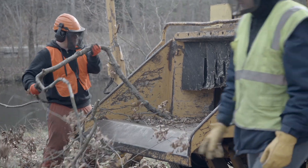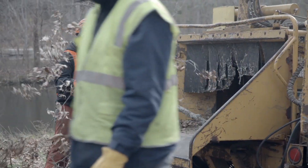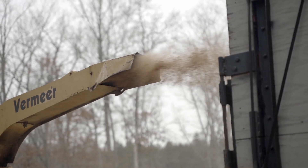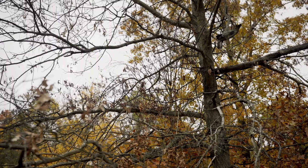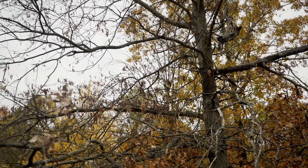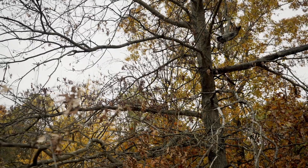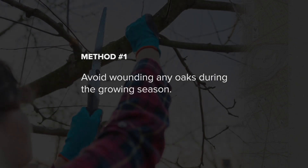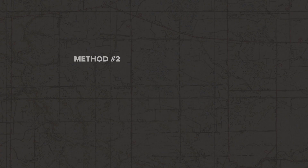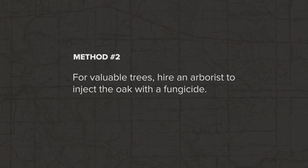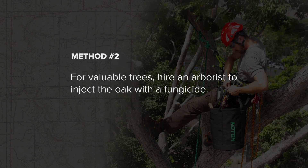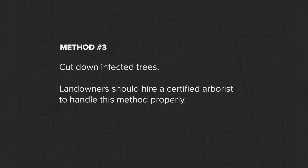The impact that private landowners can have by not managing an oak wilt outbreak can be widespread. For private landowners, there are several recommended methods for preventing an outbreak: firstly, avoid wounding any oaks during the growing season; secondly, for valuable trees, hire an arborist to inject the oak annually with a fungicide; and finally, cut down infected trees.